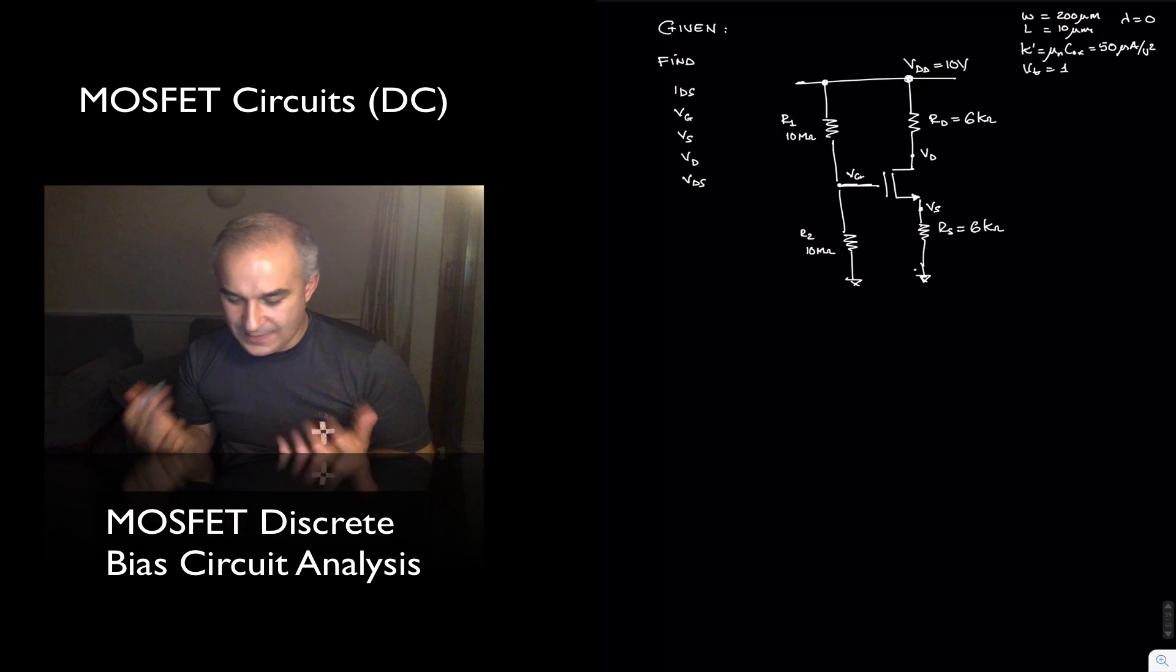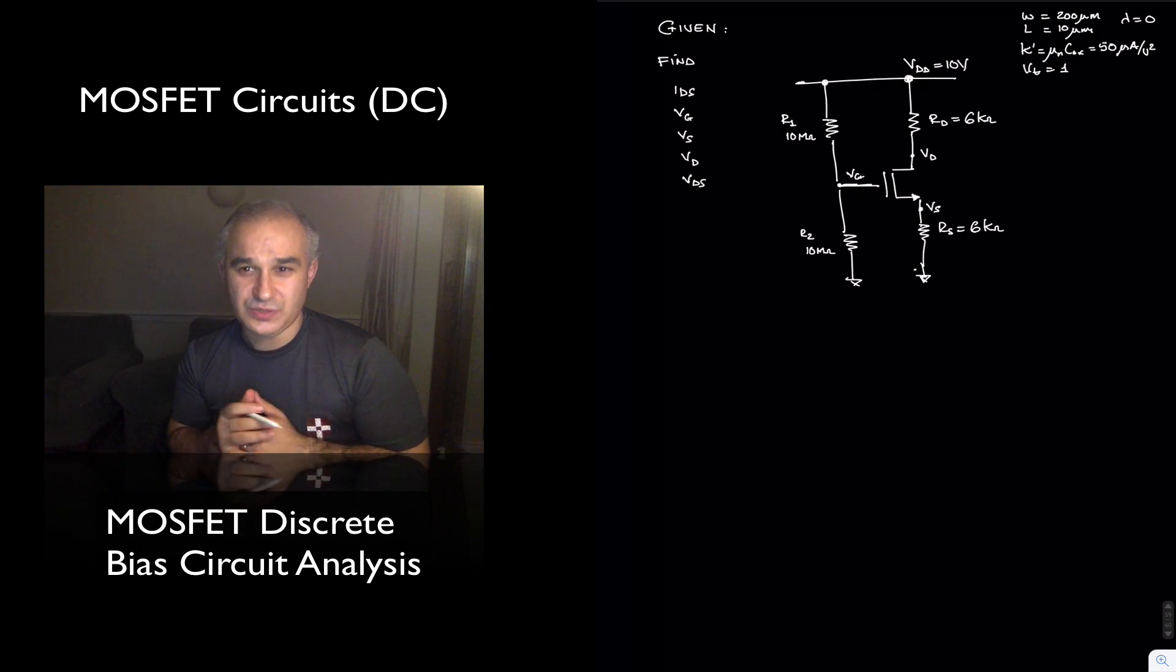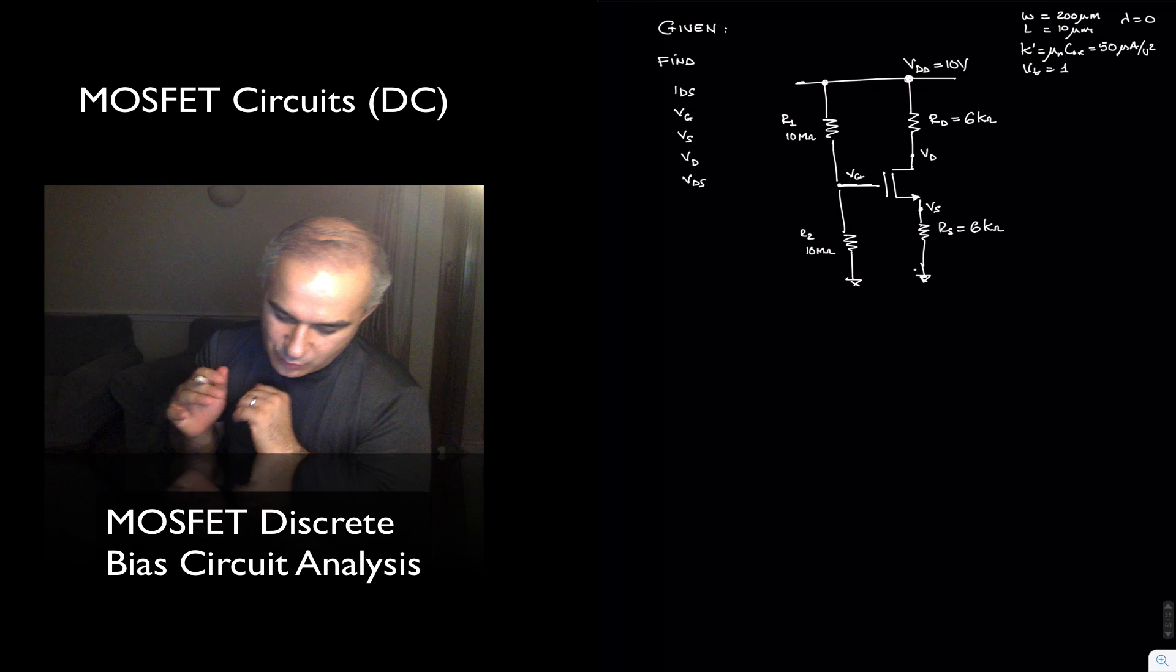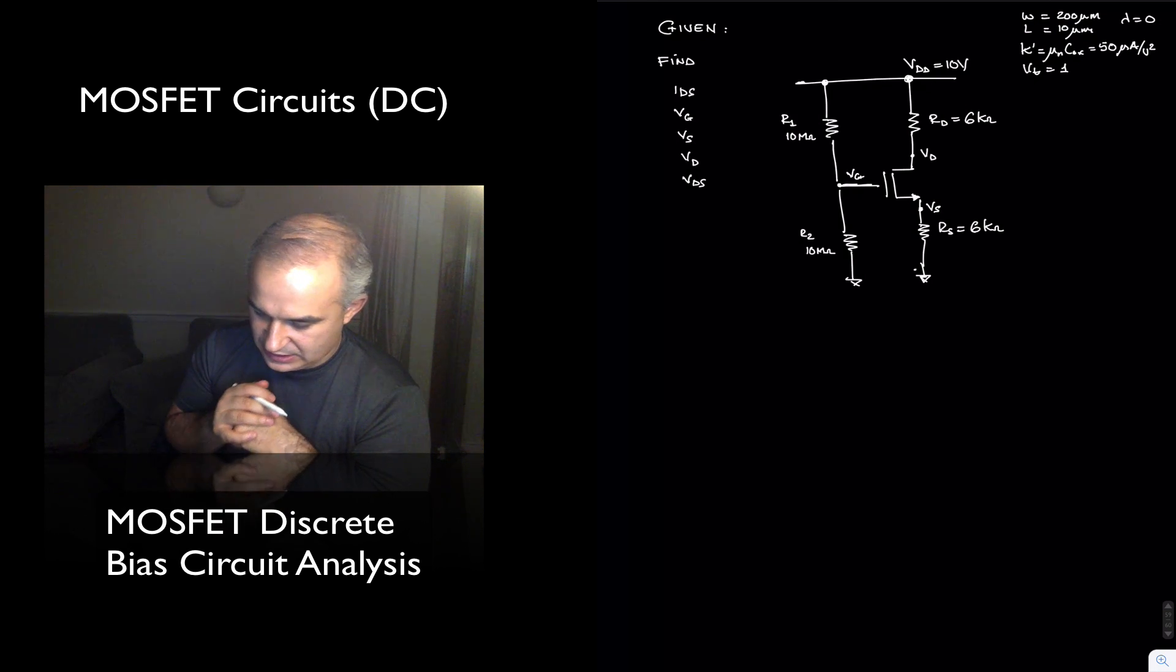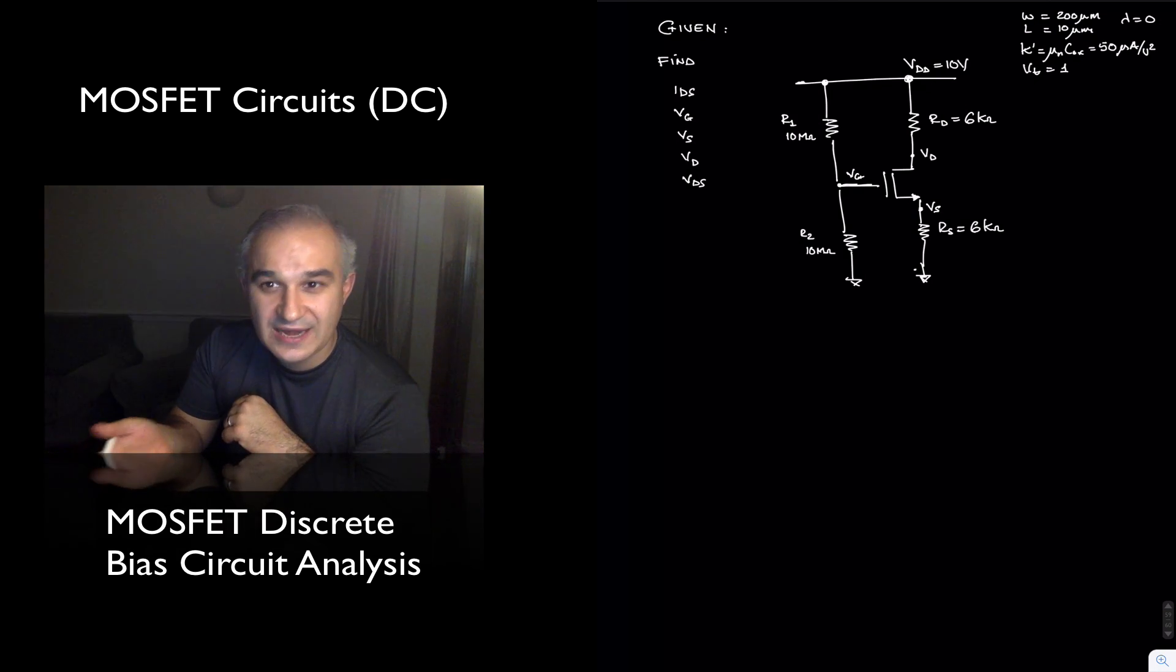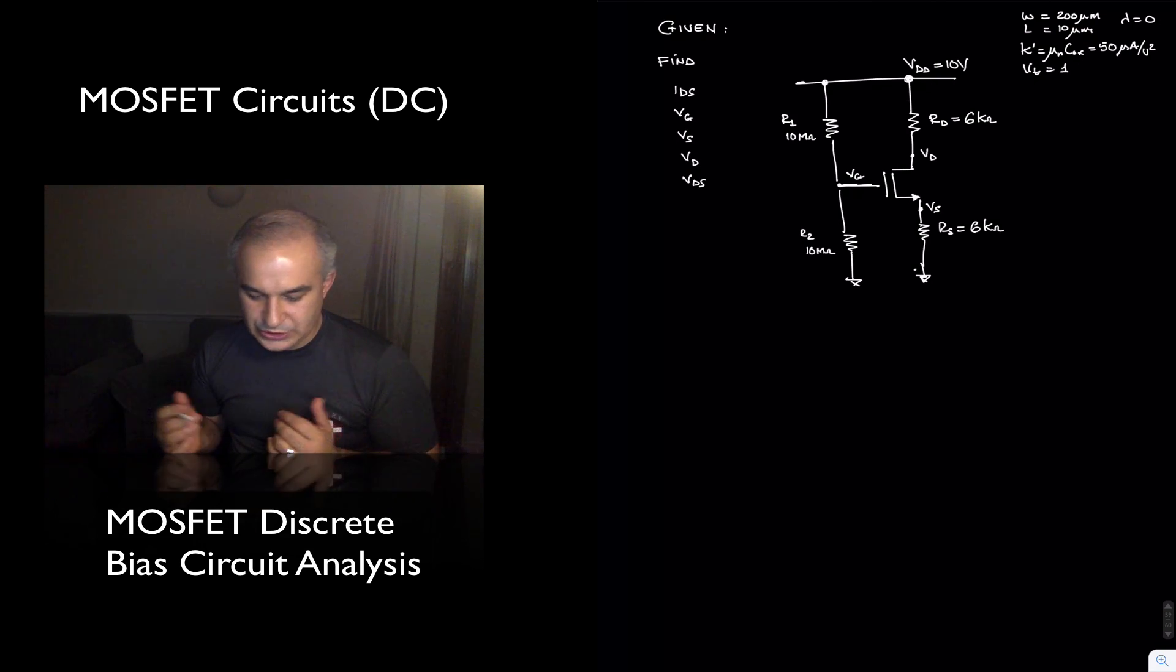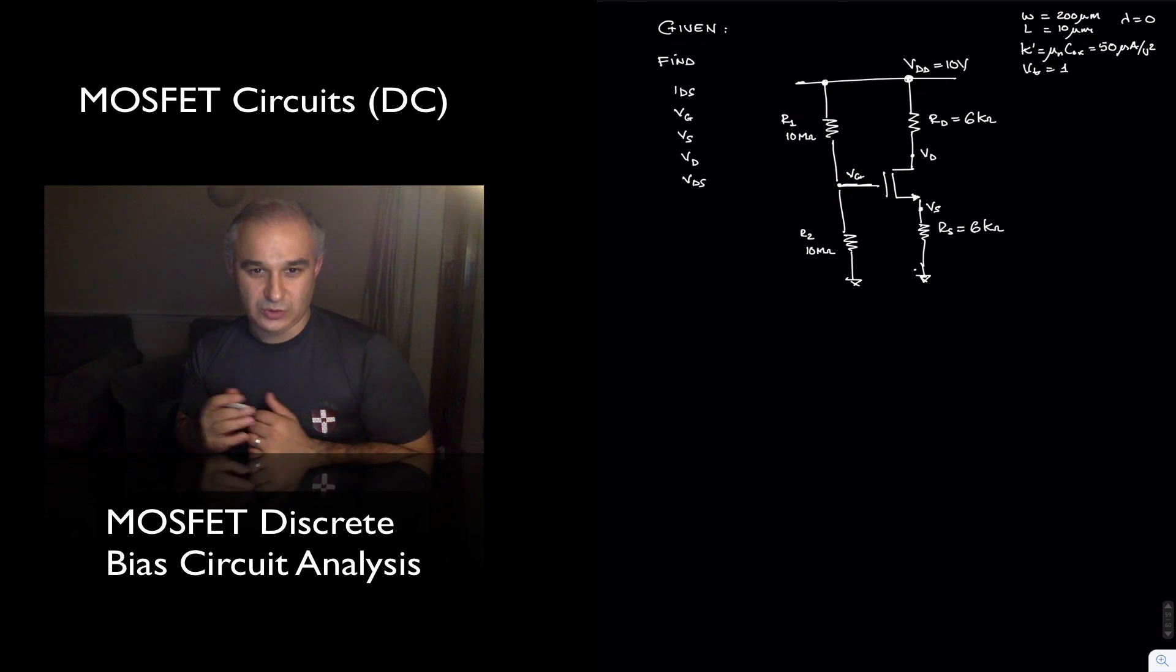In this video we are going to do an example of discrete analysis with MOSFET transistors. We are given a 4-resistor bias network with a MOSFET, particular values that characterize the MOSFET, and we need to find the current drain to source, the voltages at the gate, the source at the drain, and voltage drain to source.